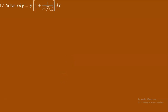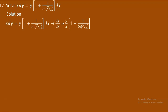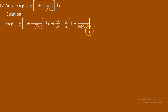Moving to Question 12: solve x dy = y(1 + 1/ln(y/x)) dx. To identify the type, rewrite as dy/dx = (y/x)(1 + 1/ln(y/x)). The right side is entirely a function of y/x, so this is a homogeneous differential equation.